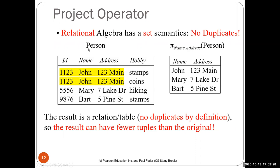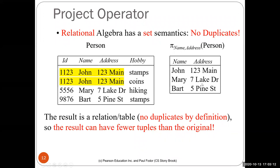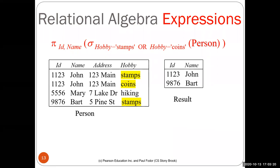Relational algebra has set semantics — no duplicates. For example, projecting the original table on name and address might yield: John at 123 Main St (twice), Mary at 7 Lake Drive, Bart at 5 Pine Street. The duplicate for John is eliminated. So the result has fewer tuples than the original. Projection may eliminate rows because only unique elements are kept.